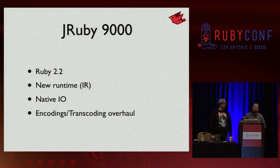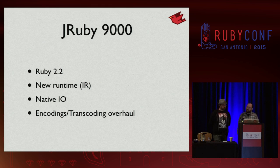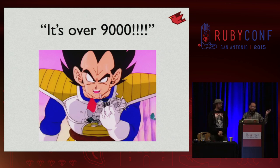JRuby 9000's high-level features: we're tracking CRuby, we have a brand-new runtime we've been working on for years, we're now bypassing Java for I/O with mostly native calls for better performance and compatibility, we're probably the most POSIX-friendly JVM language at this point, and Oniguruma's transcoding facilities have been completely ported — we have no more encoding bugs. As for the version number 9000 — it started as a joke since calling it JRuby 2 would have been confusing with Ruby 2 coming out.